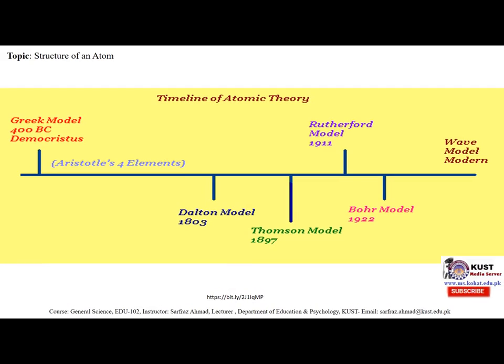There is a timeline of atomic theory. First there was the Greek model at 400 BC given by Democritus, then Aristotle's four elements, then Dalton's model in 1803, then Thomson's model in 1897, then Rutherford's model in 1911, then Bohr's model in 1922, and then the wave model and modern models. This was the timeline of atomic theory covering all major work done on the atom.